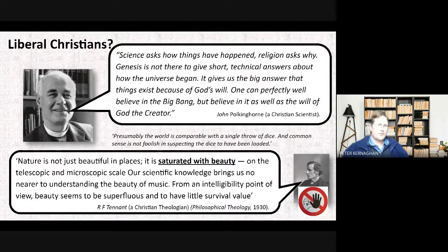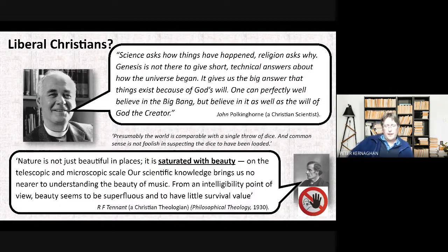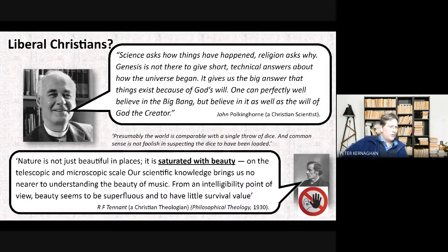Liberal Christians such as Polkinghorne say science asks how questions while religion asks why — Genesis doesn't give technical answers but tells us things exist because of God's will. One can believe in the big bang and also believe it was the will of the Creator. R.F. Tennant makes the aesthetic argument: life is saturated with beauty on both telescopic and microscopic scales, and beauty seems superfluous from a scientific standpoint. He also argued life is simply too improbable — like rolling a six on a dice a million times in a row — to be there merely by chance.